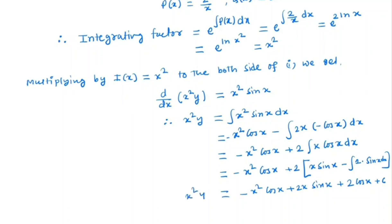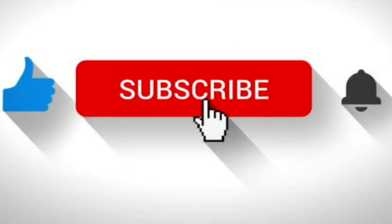So this is the general solution: x squared y equals minus x squared cos x plus 2x sin x plus 2 cos x plus c.